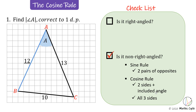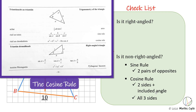We have the side of length 12, the side of length 13, and the side of length 10 that is opposite the included angle I'm looking for. We have the setup we need for the cosine rule — our two sides in blue and the included angle and opposite side in orange. The only difference this time is that we know the side opposite the included angle; it's the included angle itself that we're looking for.